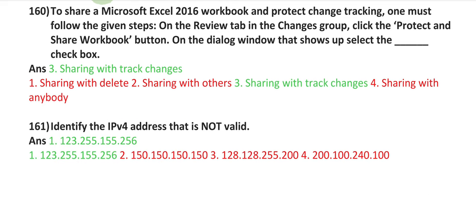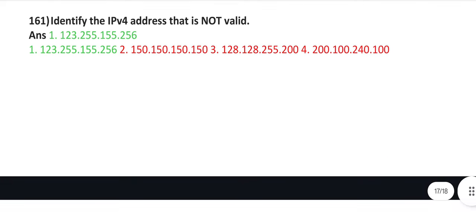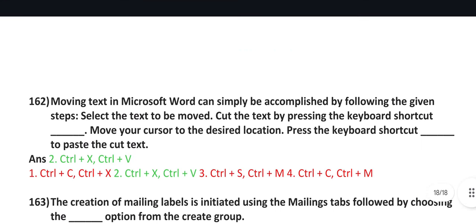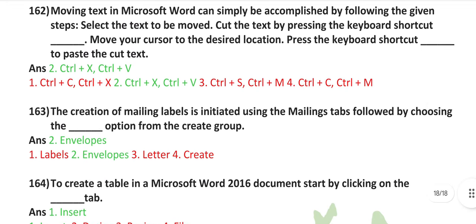To share a Microsoft Excel 2016 workbook and protect change tracking, one must follow the given steps: On the review tab, in the changes group, click the protect and share workbook button. On the dialog window that shows up, select the sharing with track changes checkbox. Identify the IPv4 address that is not valid: 123.255.155.256. Moving text in Microsoft Word can simply be accomplished by following the given steps: Select the text to be moved, cut the text by pressing the keyboard shortcut Control plus X, move your cursor to the desired location.